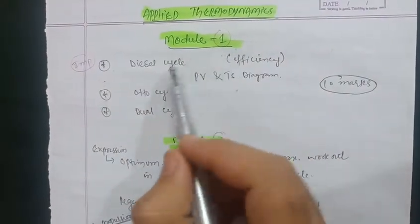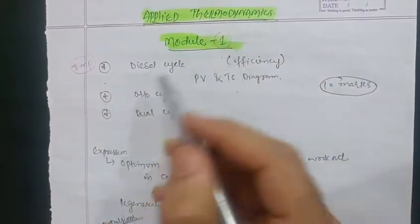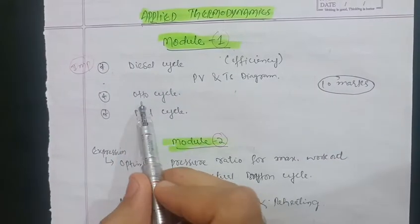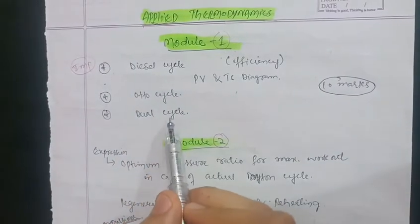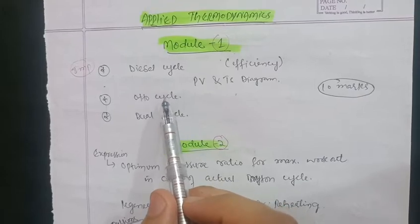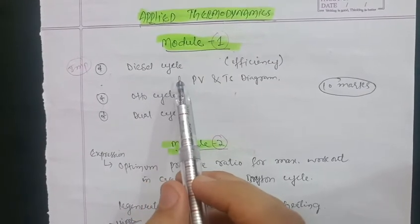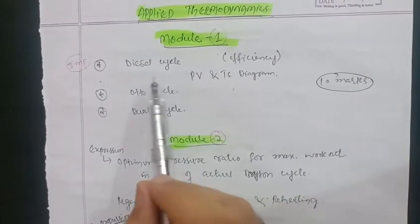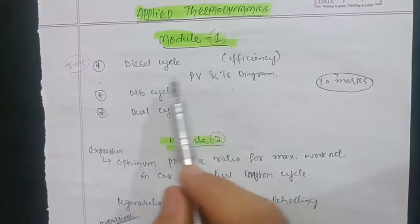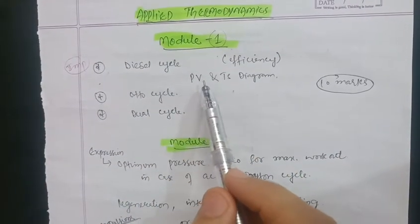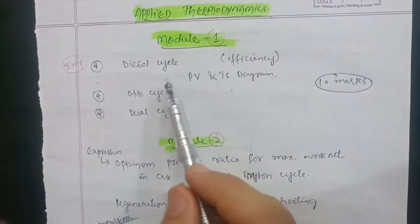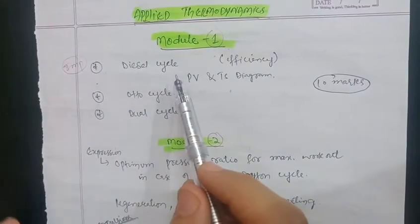In Module 1, there is the Diesel cycle, Otto cycle, and Dual cycle. Go through at least two of these three cycles. They may ask you to derive the efficiency with a neat sketch of the PV and TS diagrams. Just go through two cycles out of three — the Diesel cycle and the Otto cycle.